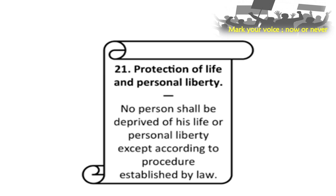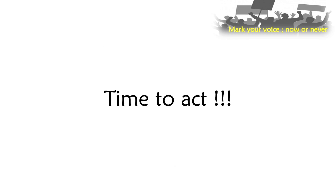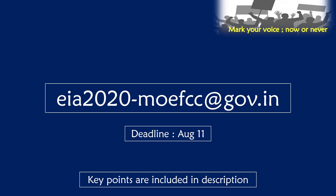Analyzing the complete picture: previously the rules were very strict but implementation was so bad, and the regulating bodies didn't work well. So think about what the scenario will be if the rules are very lenient and the implementation is also bad. Article 21 of the Indian Constitution says the protection of life and personal liberty — no person shall be deprived of life or personal liberty except according to procedure established by law. So EIA Draft 2020 is not only harmful for the environment but also violates the rights of citizens.